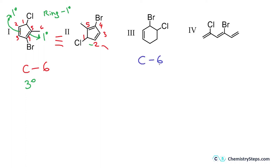The third structure has six carbon atoms, but checking the degrees of unsaturation: one double bond (one degree) plus a ring (one degree) gives only two degrees of unsaturation. This means it has more hydrogen atoms than the other structures, which have two pi bonds. Therefore, this is not a constitutional isomer of the others.